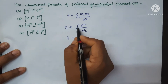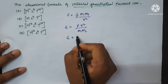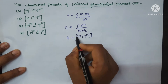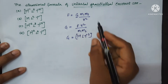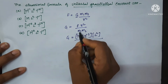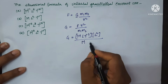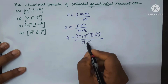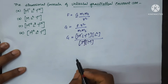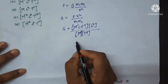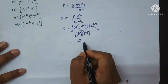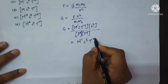Now write the dimensions: F is force, which is M L T power minus 2. And here R is the distance between the two masses, so it is L square. Upon M1 that is M, and for M2 that is M. One M and M get cancelled. The remaining terms are M power minus 1, and here L and L square gives L cube, and here it is T power minus 2.